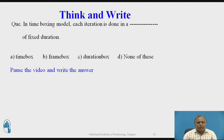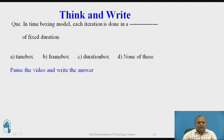Think and write: I am going to ask one question. Please pause the video and write the answer. In the time boxing model, each iteration is done in a ___ of fixed week duration. Option A: time box. Option B: frame box. Option C: duration box. Option D: none of these. The correct answer is time box — each iteration is done in a time box of fixed duration.